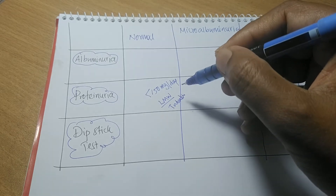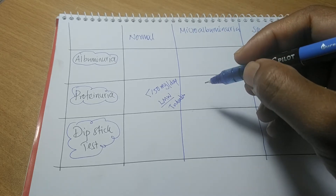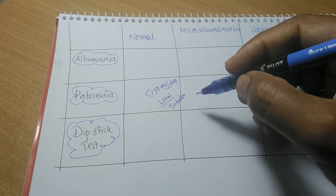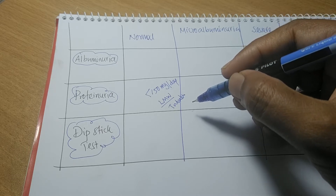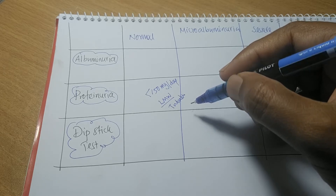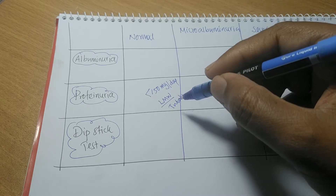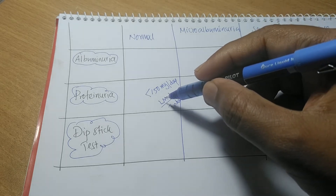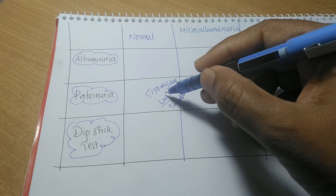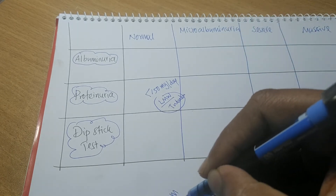To recap: both low and high molecular weight proteins can pass through the glomerular basement membrane, but low molecular weight protein can be completely reabsorbed by the renal tubular cells, whereas high molecular weight protein cannot be reabsorbed. The renal tubular cells also secrete some low molecular weight protein, and these proteins — which are less than 150 mg per day — are known as Tamm-Horsfall protein, which is tubular in origin.